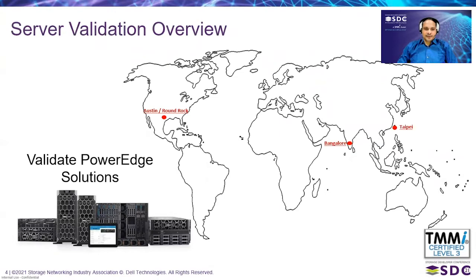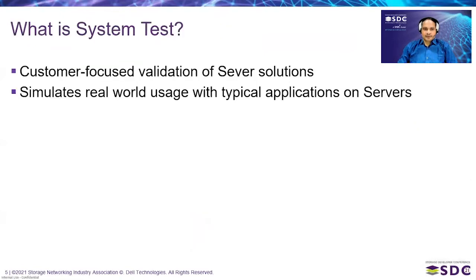The server validation group is geo-located in three different locations: Austin, Bangalore, and Taipei. We do end-to-end validation of servers before we release to market. This validation covers all peripheral components, functionalities, storage, networking, and software stack.